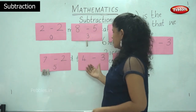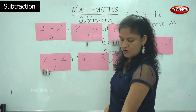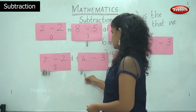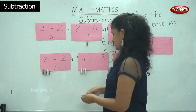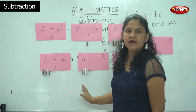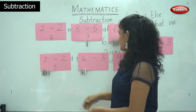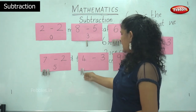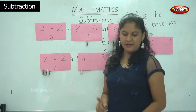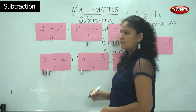Next, 4 minus 3. I clip on 4 pegs: 1, 2, 3 and 4. I have to subtract 3, so I remove 3 pegs: 1, 2 and 3. There is only 1 peg remaining, and that is the answer. So 4 take away 3 gives me number 1.